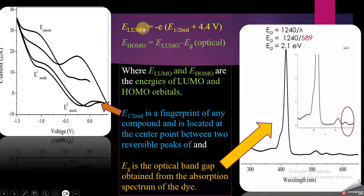I put the value of band gap here. E_LUMO I already calculated from this formula using cyclic voltammetry, and I can get the value of E_HOMO. These two experimental techniques can be used.